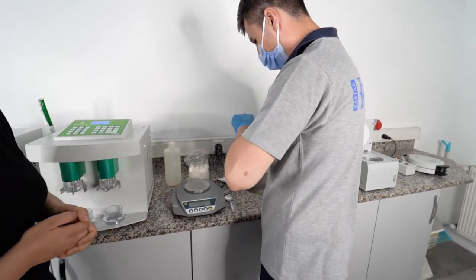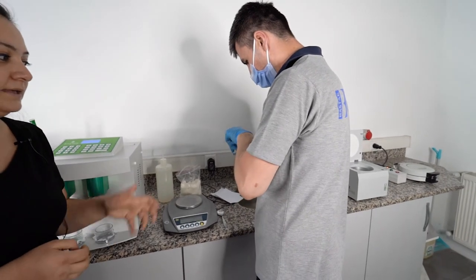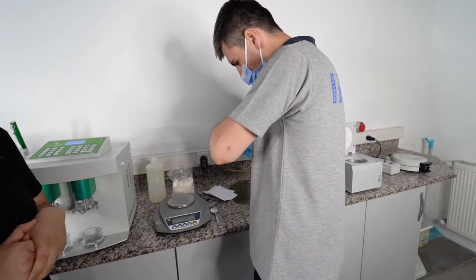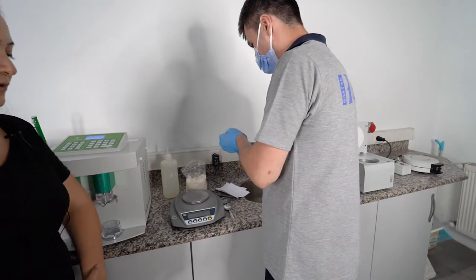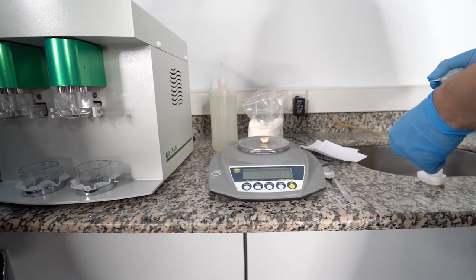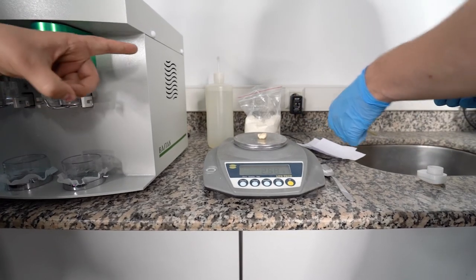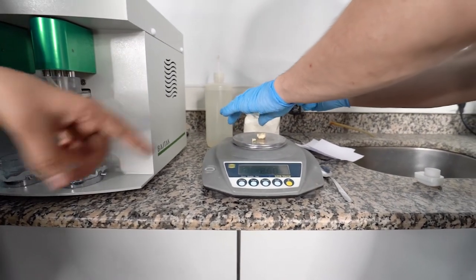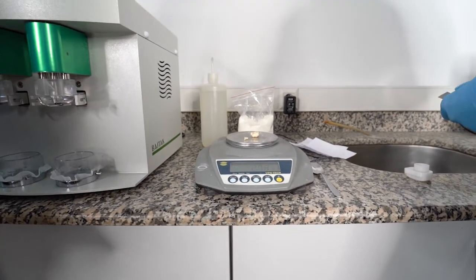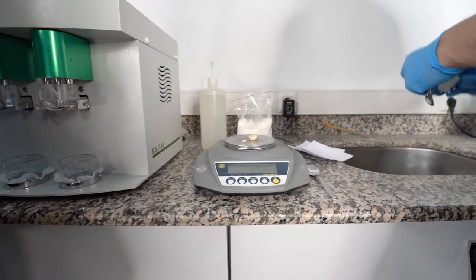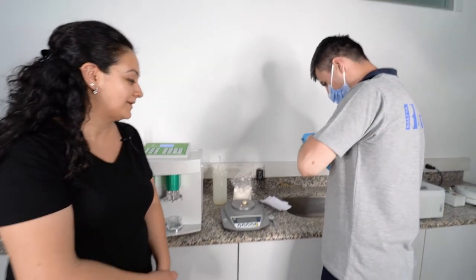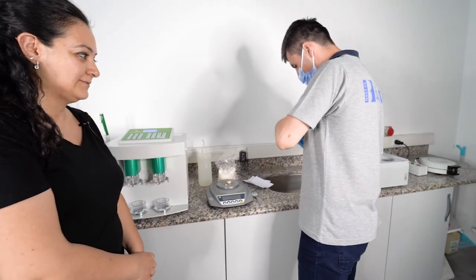The calculation of the gluten index is strong gluten divided by total gluten and multiplied by 100 in order to calculate percentage. This is the strong amount: 2.58. And now we are adding the weak amount: 2.73 is the total amount. We are calculating the strong value, dividing by the total amount, and multiplying by 100.